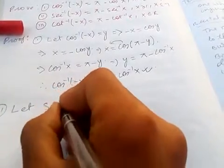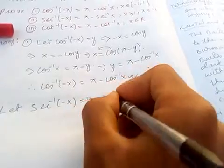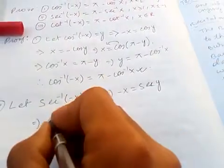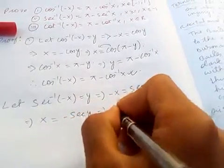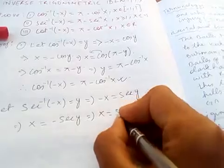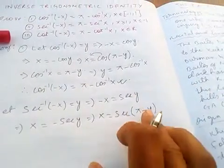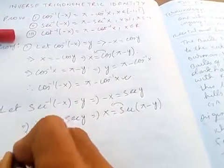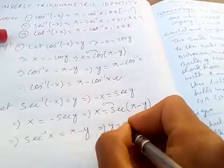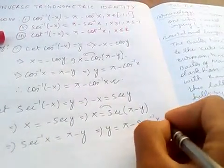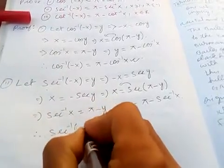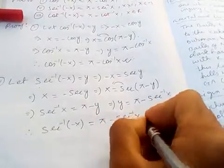Let sec inverse of minus x equal y, which means minus x equals sec of y. Multiplying both sides by minus one gives x equals minus sec of y. Secant is negative in the second quadrant, so sec equals pi minus y, that is 180 minus y. Transferring, we get sec inverse of x equals pi minus y, so y equals pi minus sec inverse of x. Therefore, sec inverse of minus x equals pi minus sec inverse of x. This is the second part.